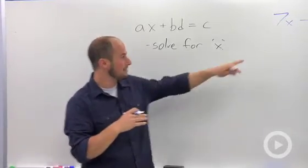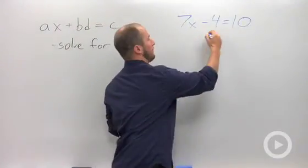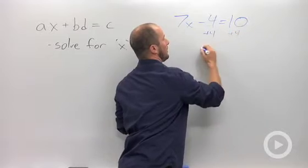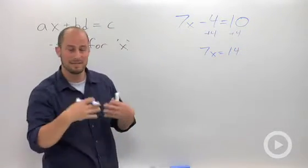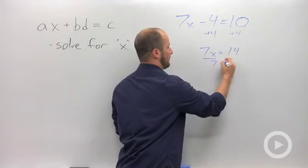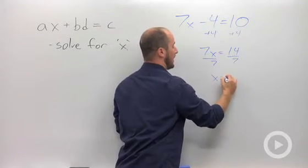What we would do is add the 4 over, leaving us with 7x equals 14, and then divide by 7, leaving us with x equals 2.